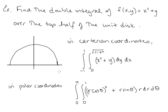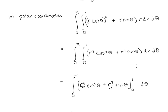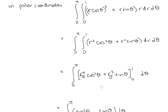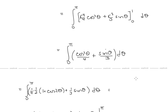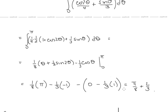In polar coordinates, we can easily describe the domain as r going from 0 to 1 and theta going from 0 to pi. Then x squared becomes (r cosine theta) squared, y becomes r sine theta, and the area element dy dx becomes r dr dtheta. Distributing the r and integrating gives r to the fourth over 4 times cosine squared theta plus r cubed over 3 times sine theta. Plugging in bounds, making the substitution for cosine squared theta, integrating with respect to theta, and plugging in our bounds gives pi over 8 plus 2/3.